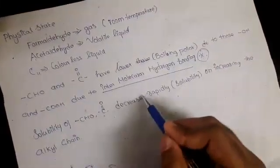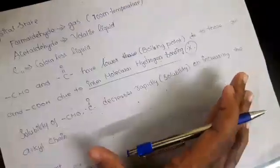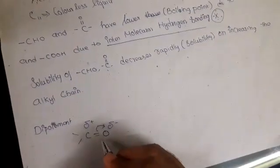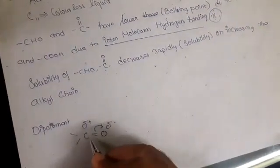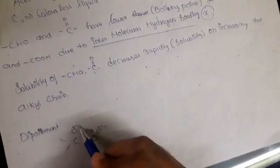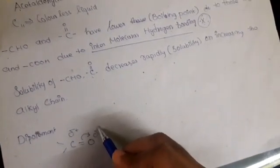Solubility of aldehydes and ketones decreases as chain length increases. Regarding dipole moment, oxygen is more electronegative than carbon, so it pulls the shared pair of electrons toward itself. Carbon gains a partial positive charge and oxygen gains a partial negative charge. There is polarity in the C=O bond in carbonyl compounds.